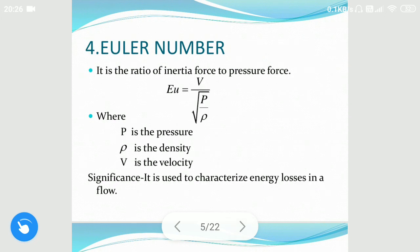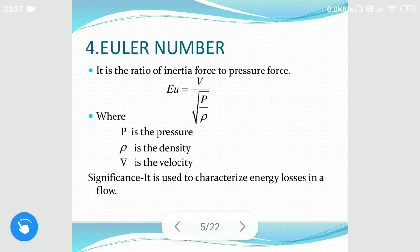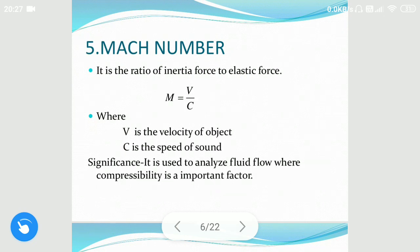The fourth is Euler's number. Euler number is a dimensionless number used for analyzing fluid flow dynamics problems where the pressure difference between two points is important. It is the ratio of inertial force to the pressure force, given as V divided by the square root of P divided by rho, where P is the pressure, rho is the density, and V is the velocity. Euler's number gives us the energy loss in the flow due to the pressure force.